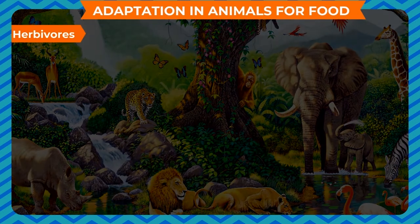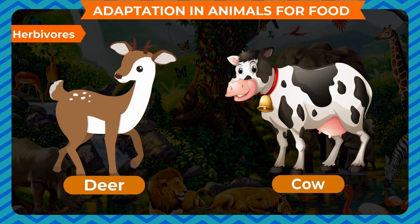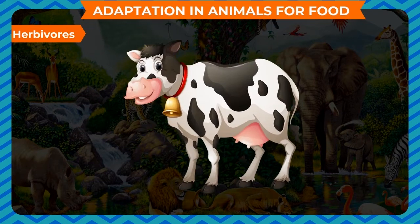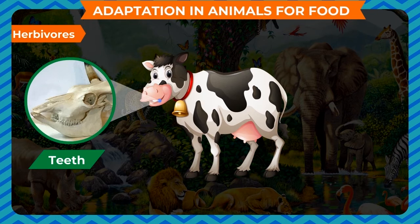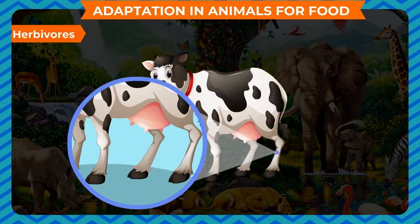Herbivores such as goats, elephants, deer, cows, etc. eat plants. They have very sharp front teeth to bite and cut the plant parts and strong, large, grinding teeth for chewing their food. They also have strong and long legs which help them to walk long distances to search for food.